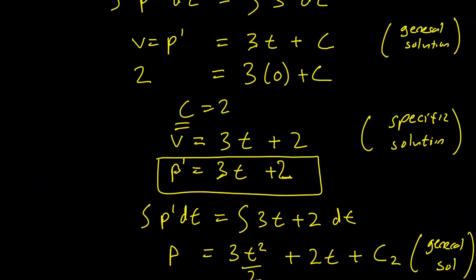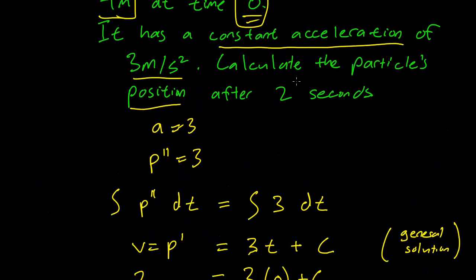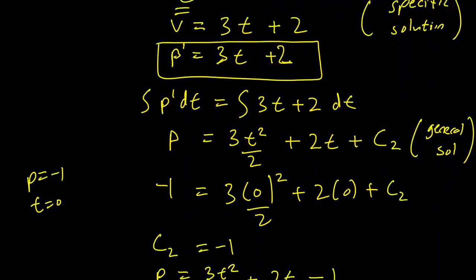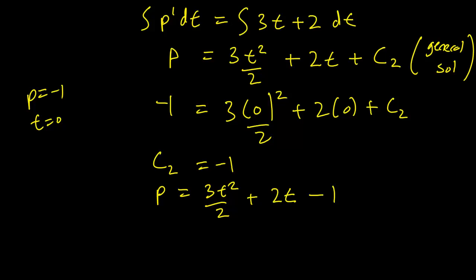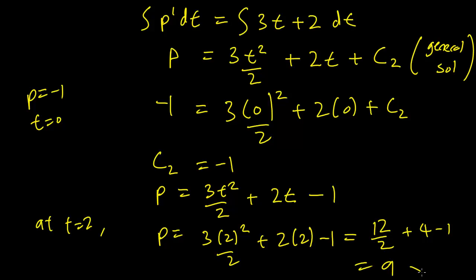So our question asks us to calculate the particle's position after 2 seconds. So at t equals 2, p is going to be 3 times 2 squared over 2 plus 2 times 2 minus 1, which equals 12 over 2 plus 4 minus 1, which is just going to be 9. And that is our solution.